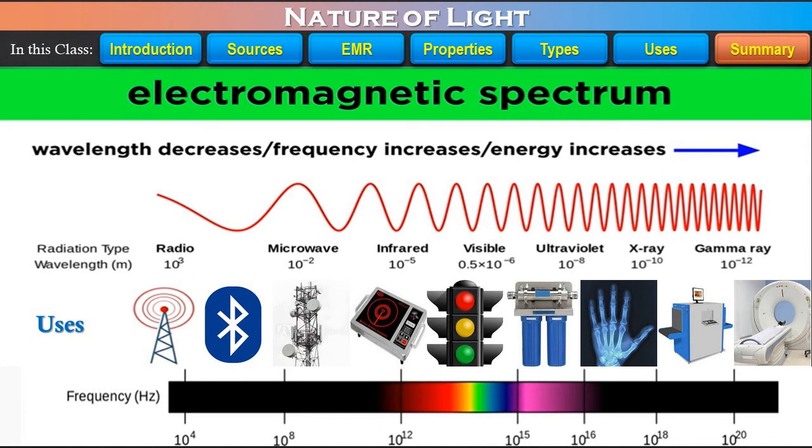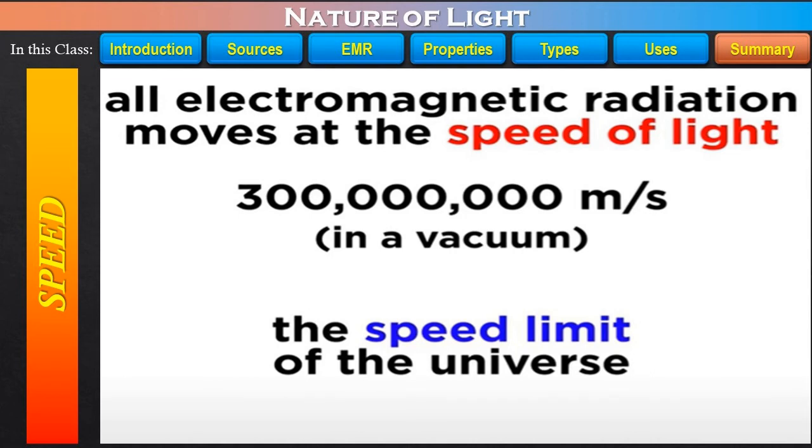So far, we have discussed how all these types of radiation differ from one another. Despite differences in their wavelength, frequency and energy, they all travel at the same speed. And this is the fastest known speed in the universe.